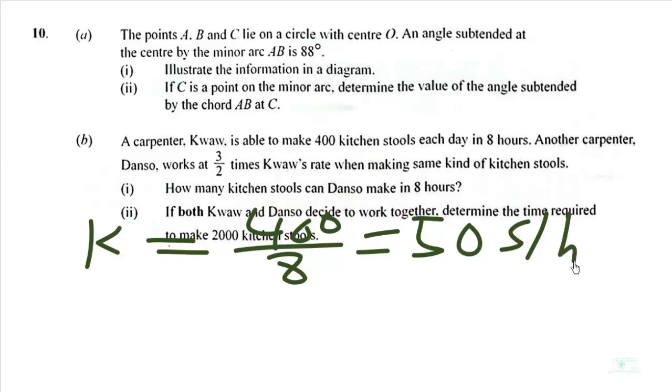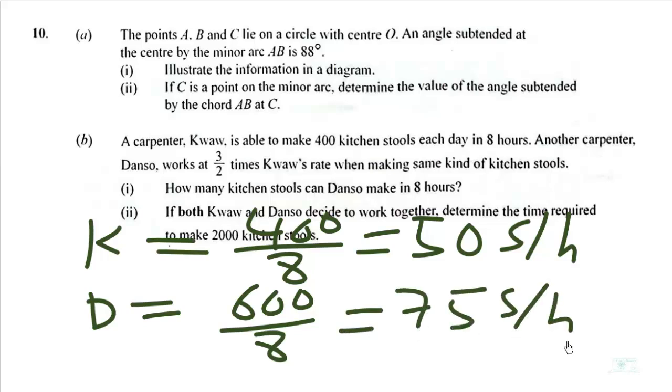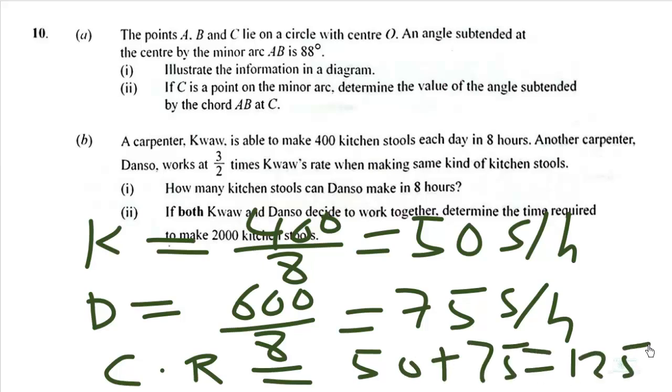Then that of Danso will be equal to 600 over 8, which is 75 stools per hour. So the combined rate will be equal to 50 plus 75, which is 125 per hour.